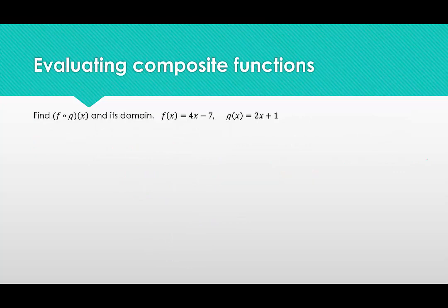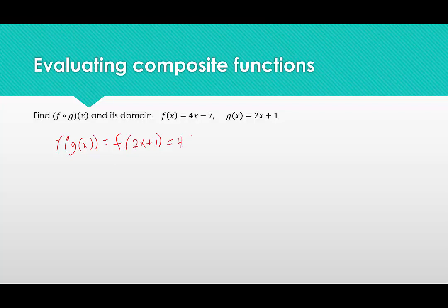Let's look at examples of evaluating composite functions. We want to find f of g of x and its domain, given f(x) = 4x - 7 and g(x) = 2x + 1. We can start with the domain restrictions — there are none, because these are both linear equations. So f of g of x equals f of (2x + 1), and anywhere we see x in f, we replace it with 2x + 1, giving us 4(2x + 1) - 7, which is 8x + 4 - 7, equaling 8x - 3.